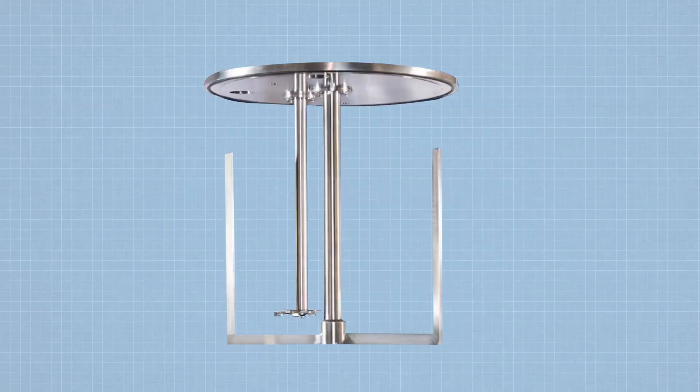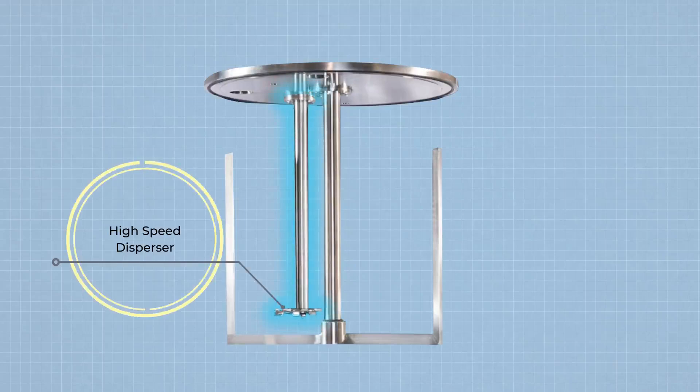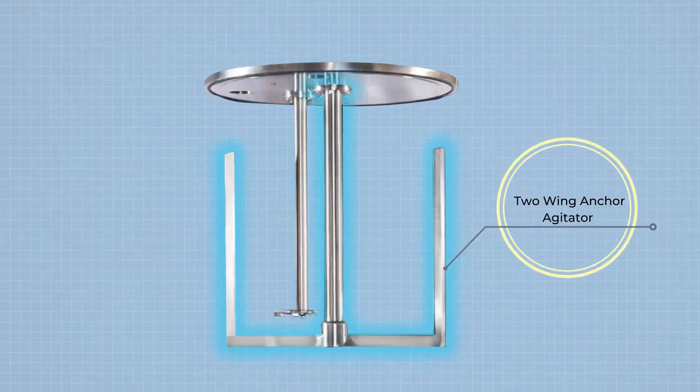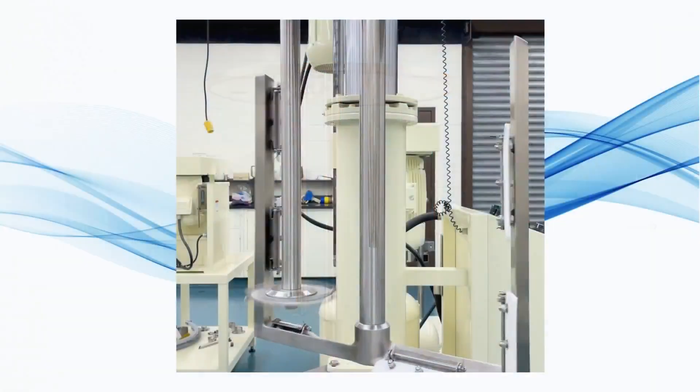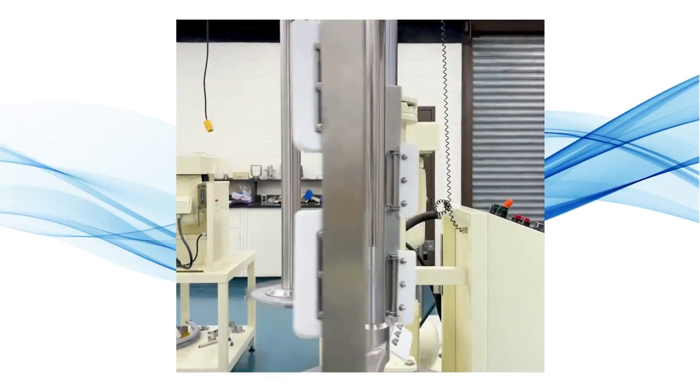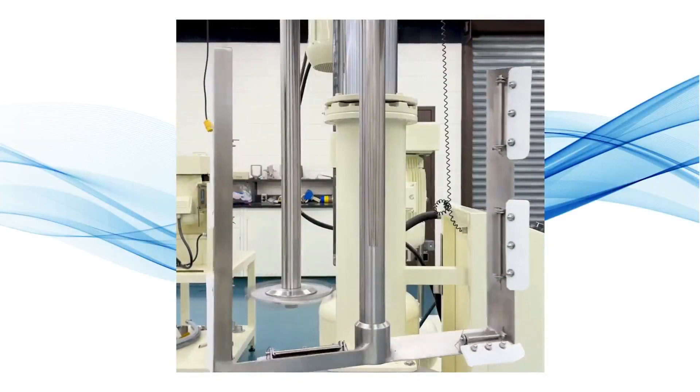Dual shaft mixers are composed of a high speed disperser and a two-wing anchor. This cost-effective system is ideal for straightforward applications that do not require the intense shear of a rotor stator.